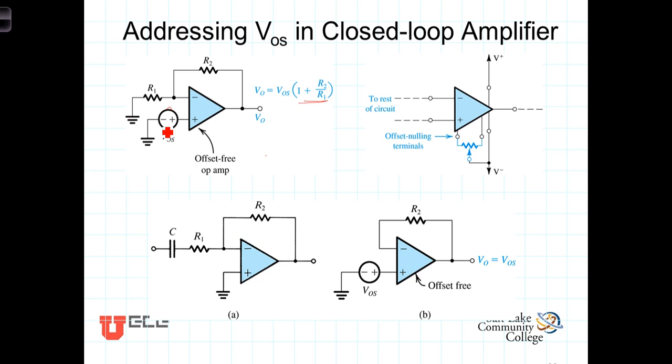So, for example, if we had a closed-loop gain of, say, 10 and a VOS of, say, 5 millivolts, there would be a DC component in the output due to the offset voltage that would be equal to 0.005 times 10 or 50 millivolts. There would be a DC offset unaccounted for from the signals equal to 50 millivolts. Or to say it another way, this offset voltage would add a DC offset that was not a part of the signal itself.